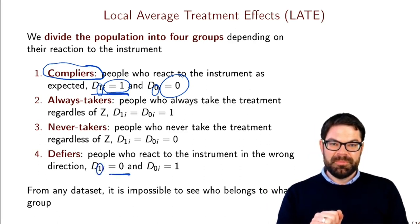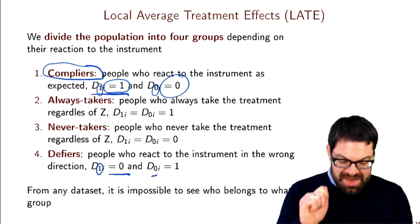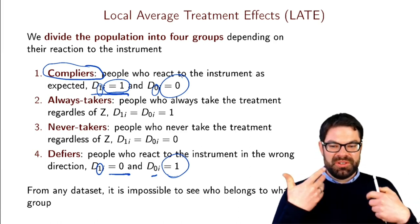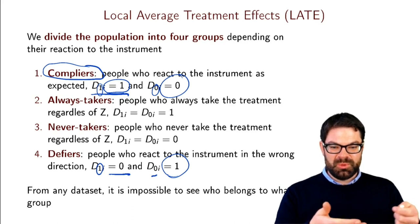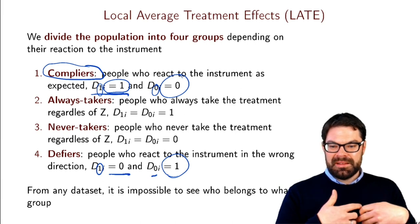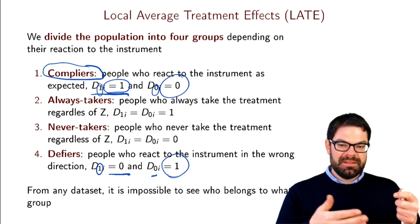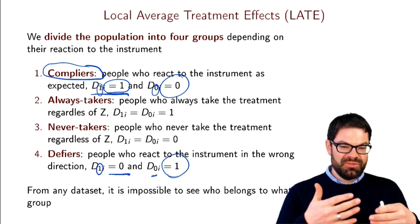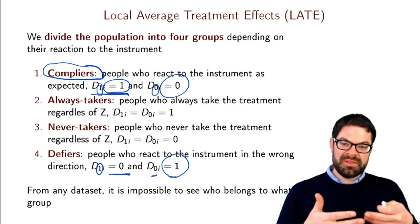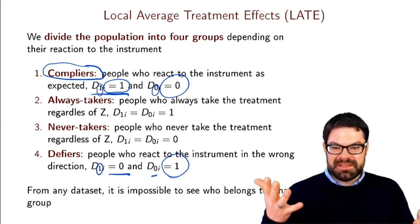Defiers are people who, if the instrument gives them an incentive to take the treatment, don't take it — but if the instrument does not give them that incentive, they actually do take it. Whether defiers are plausible depends very much on the context. In crime research or health behavior research you may well have defiers, in other contexts perhaps less so.